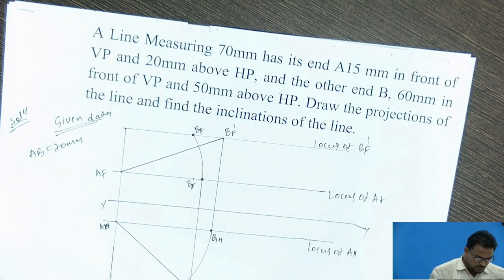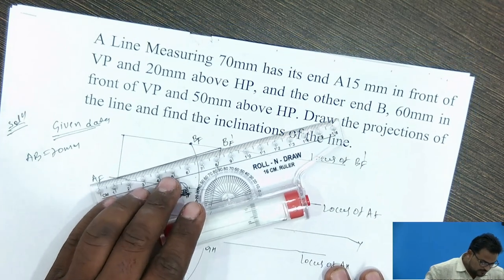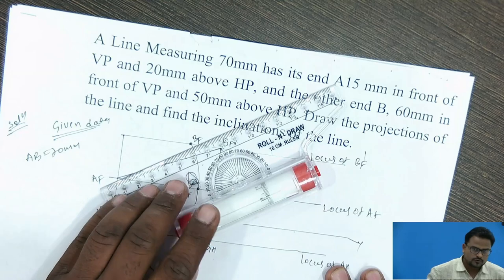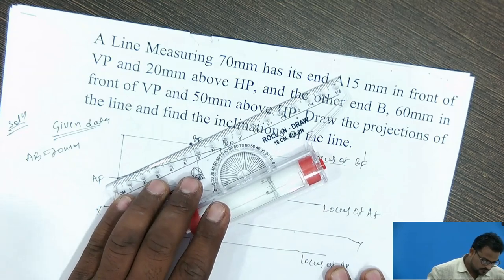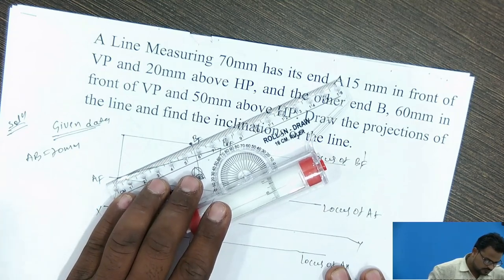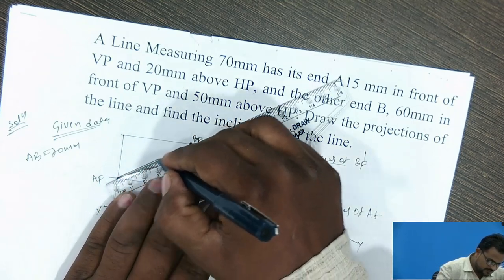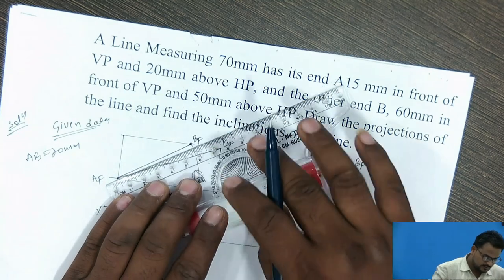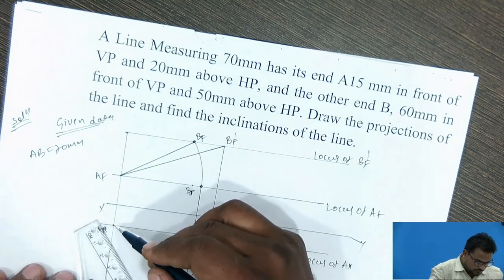Then I have to draw the front view and top view. From this I draw the front view, and this is the top view I am getting.